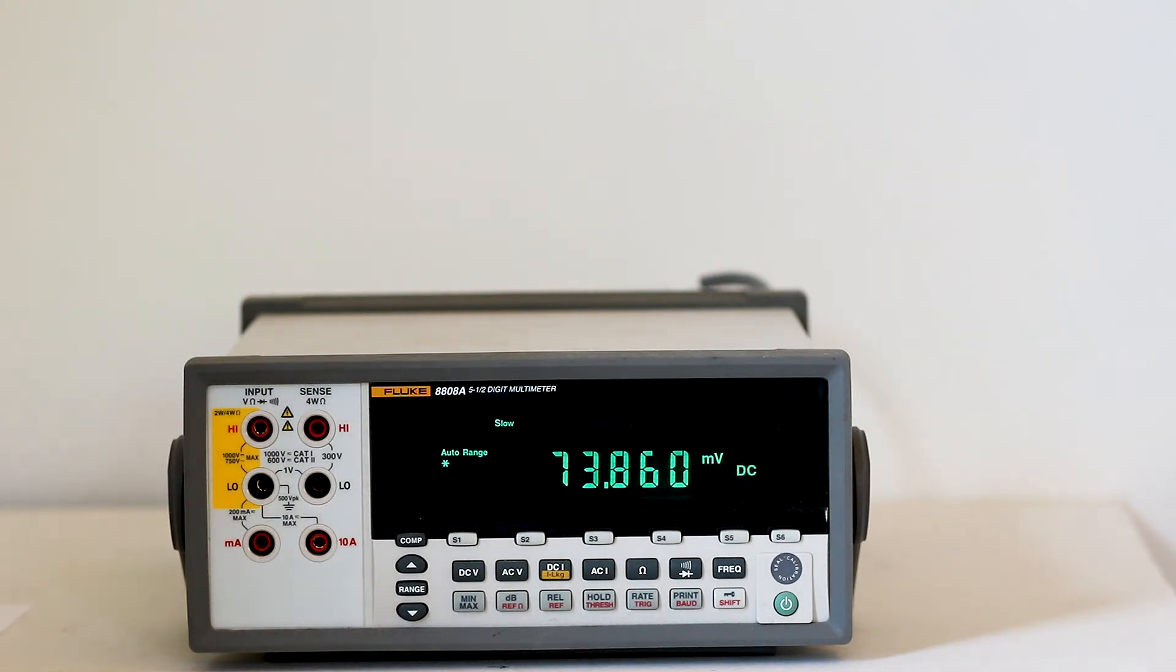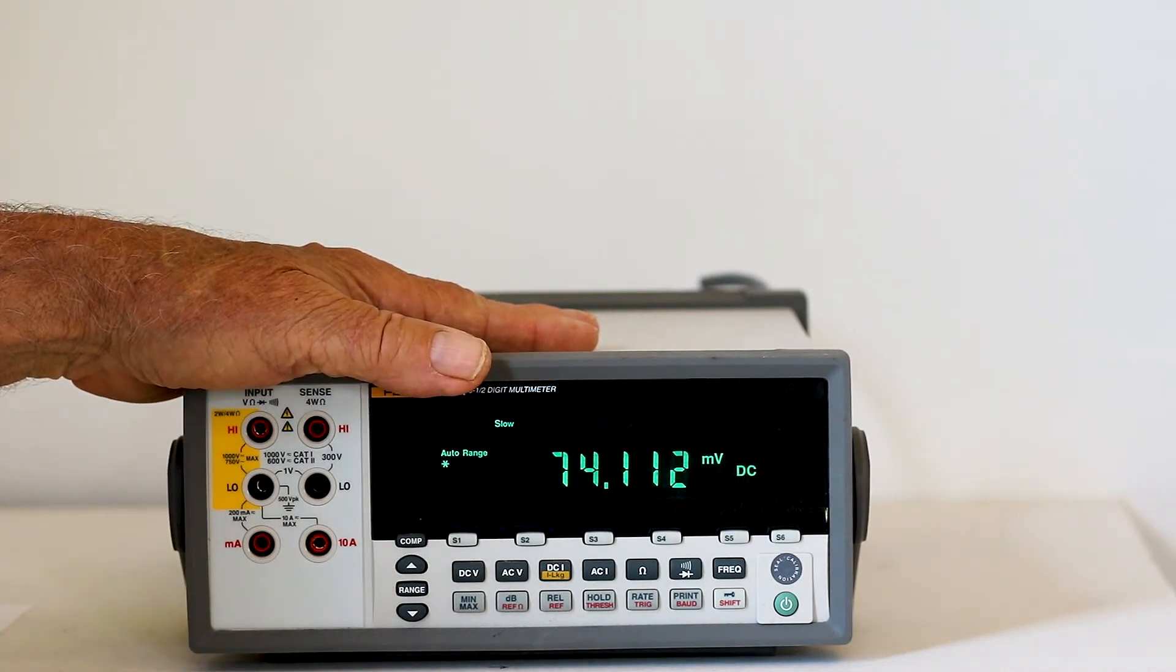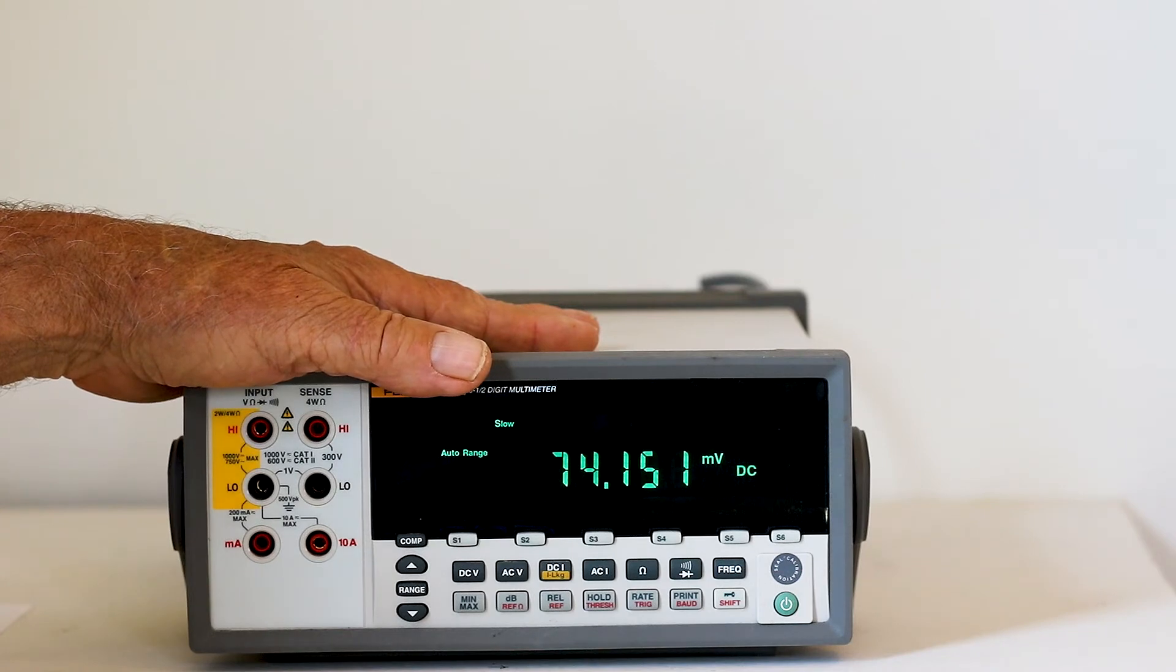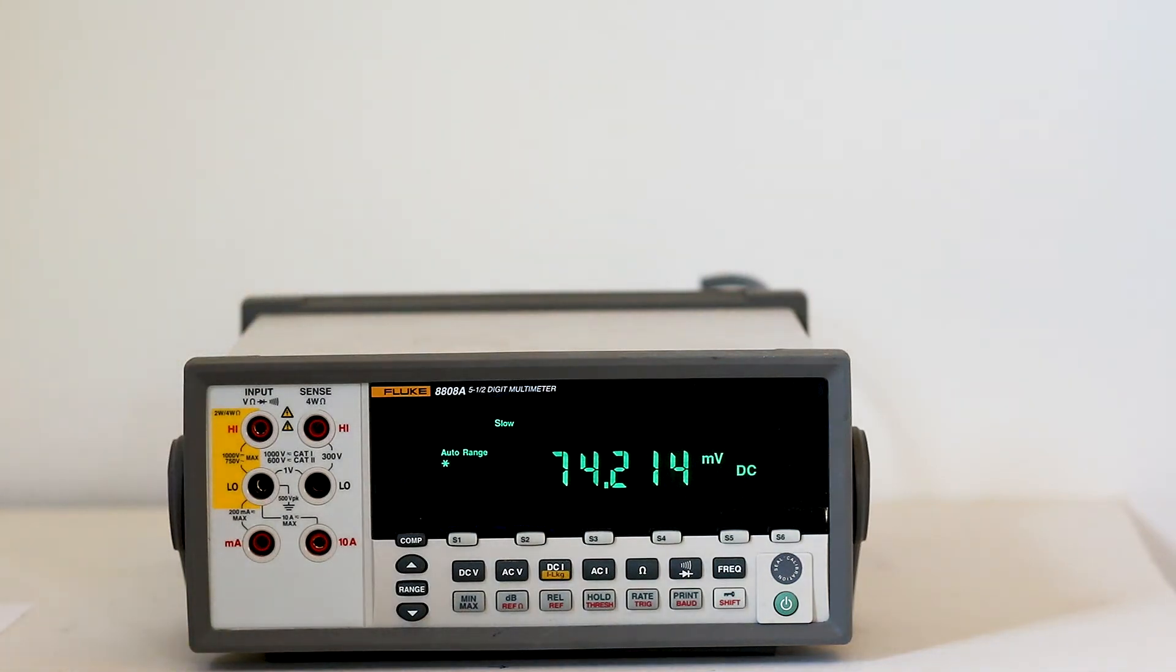Another Fluke multimeter that is useful in the shop or lab is the 8808A five and a half digit bench type digital multimeter. It has many useful features, as in the Fluke 287 handheld multimeter. With 5.5 digit resolution and up to 0.015 percent accuracy, this Fluke bench multimeter has sensitive DC leakage current ranges, front panel setup keys and the TL 2x4 wire measurement capability, which enables accurate low resistance readings using just two leads.